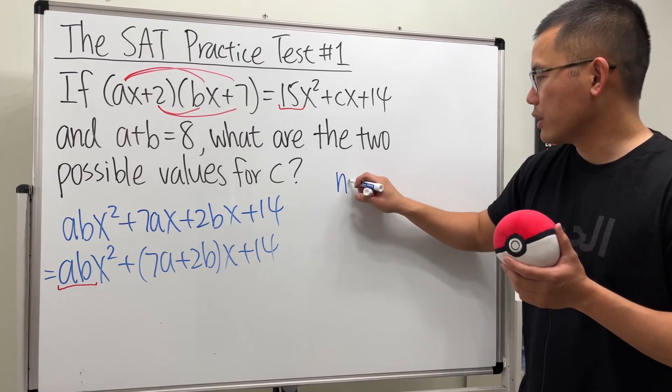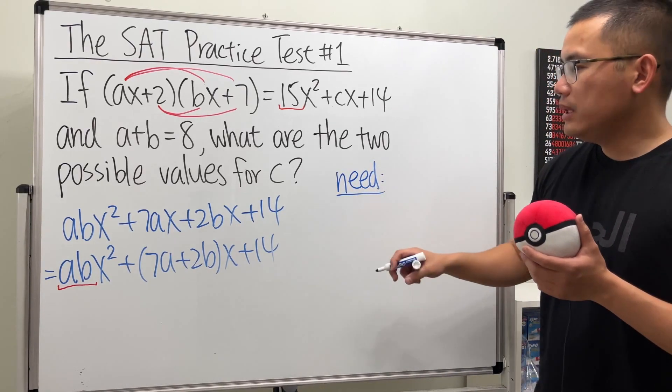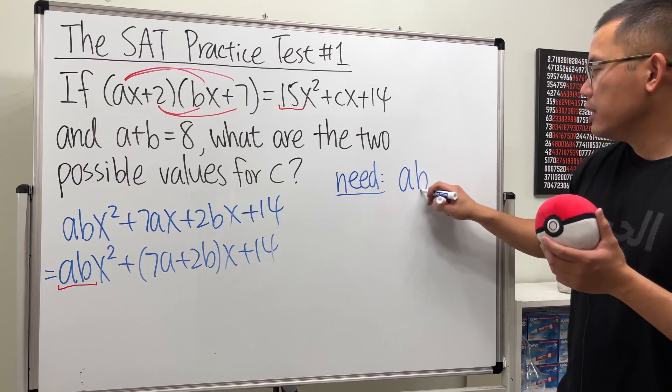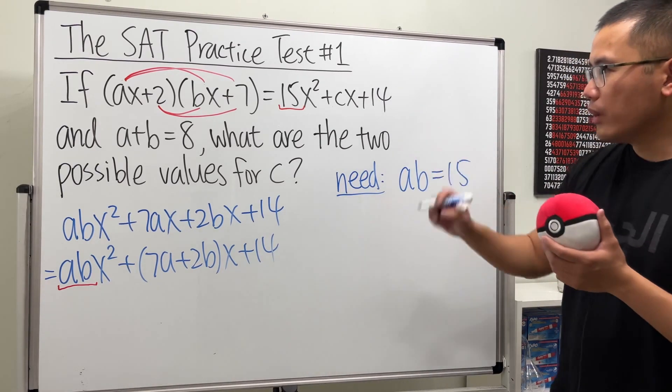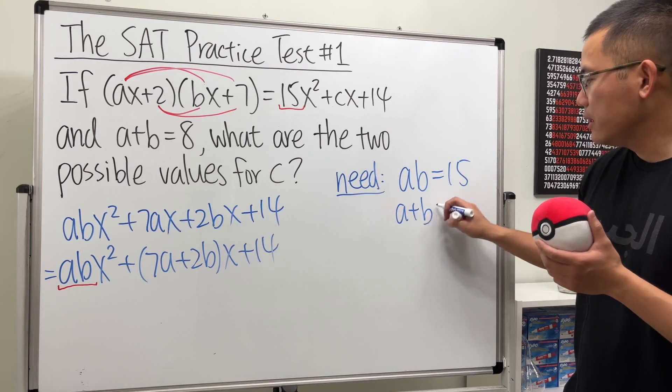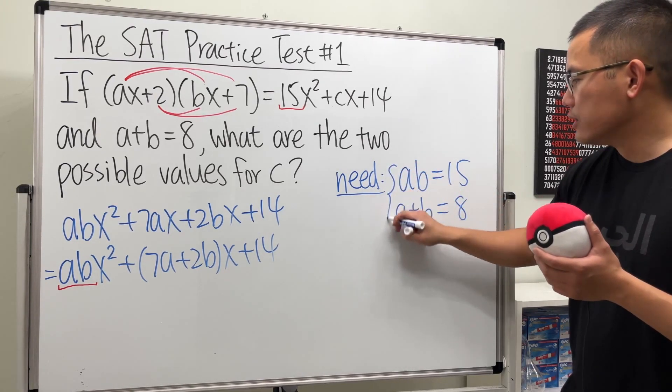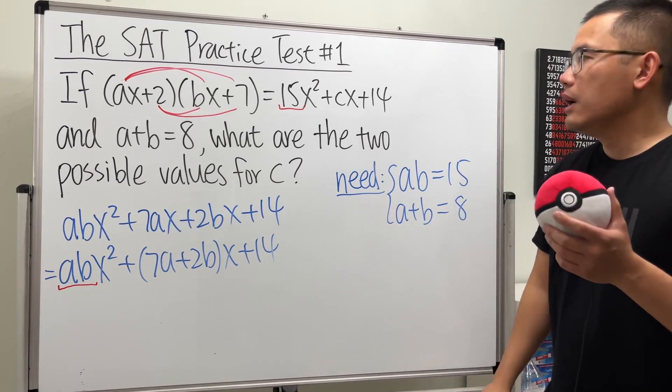So let me just write this down here for you guys. We need to have ab is equal to 15. And then we also know that a+b is equal to 8. So we have a system of equations.